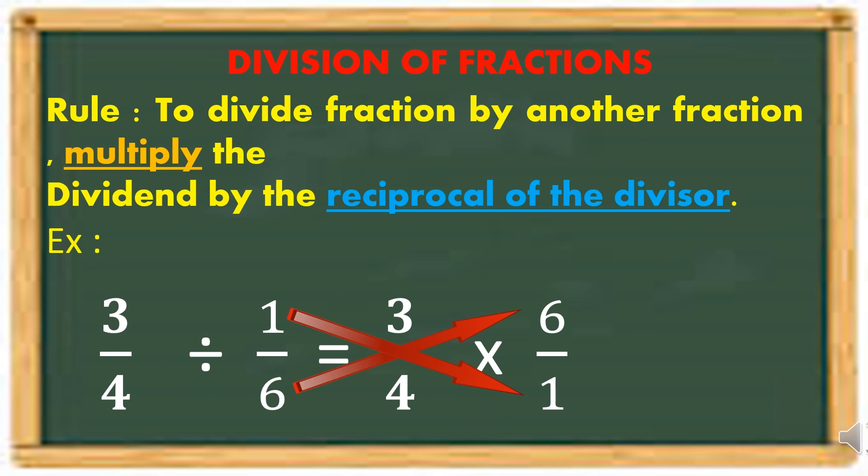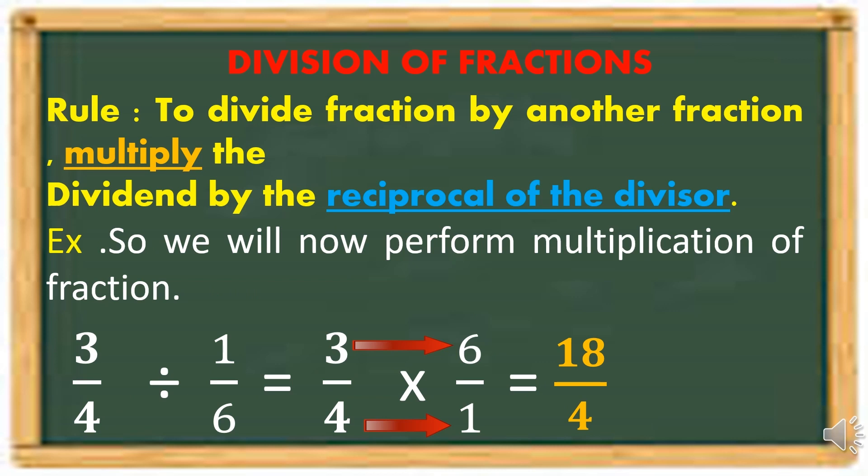The rule says multiply the dividend by the reciprocal of the divisor. So we will now change division to multiplication. Then we will do the reciprocal. So reciprocal of 1 sixth is 6 over 1. We will now proceed to multiplication of fraction.